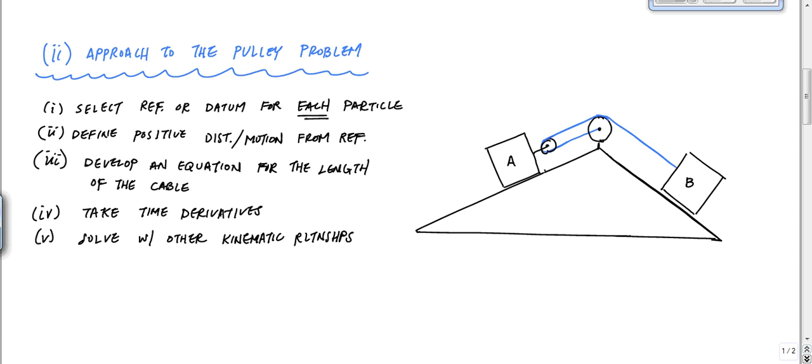And really what you want to do is for each particle, the first thing you want to do is select a reference or a datum for each particle. And that's important, the each particle. And so a characteristic of a reference or datum location is it has to be fixed, and you have to be able to define the distances. So the datum should be fixed, and it should be perpendicular to the motion of the particle. So this is kind of our characteristics of the datum here.